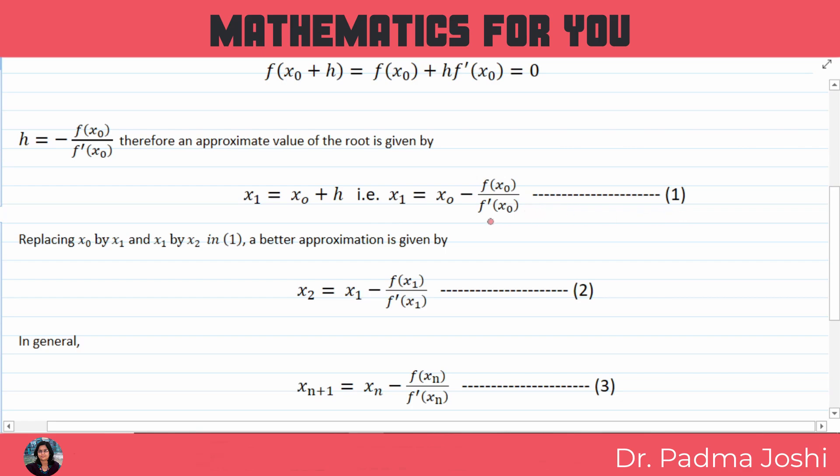Now replacing x0 by x1 and x1 by x2, yahan pe x1 ki jagah x2 agar ho jayega to yahan apne paas x2 aa jayega, yahan x1 aa jayega. To jo reduced expression hai wo yeh ban jayega aur is expression ko hum second approximation bolenge.